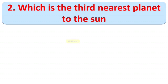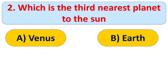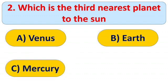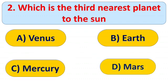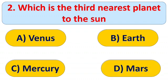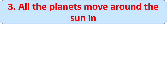Second question: which is the third nearest planet to the sun? Options: A) Venus, B) Earth, C) Mercury, and D) Mars. The right answer is B) Earth. The first and second nearest planets to the sun are Mercury and Venus, third is Earth, and fourth is Mars.